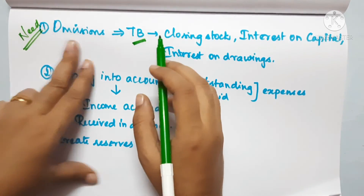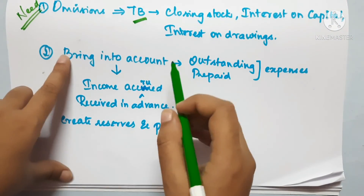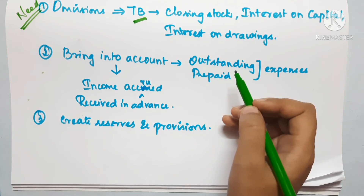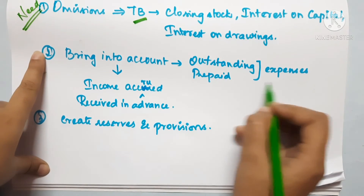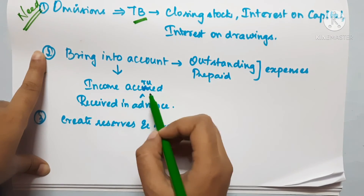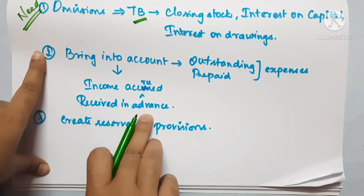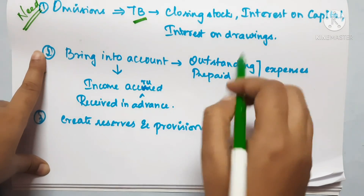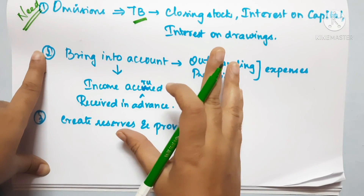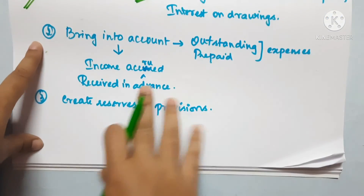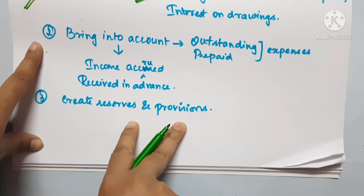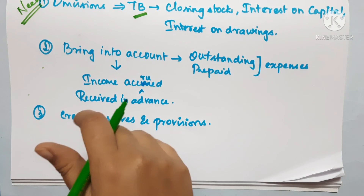If you want to account for these, we have: outstanding expenses, prepaid expenses — these are expenses-related. For income, we have accrued income and income received in advance. So we have accounts for these four types. The other need is to create reserves and provisions — these two are also important adjustment items.